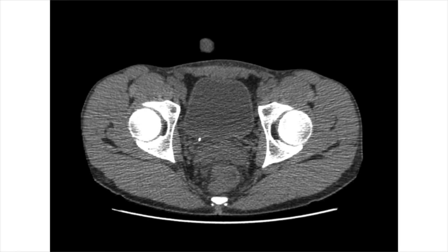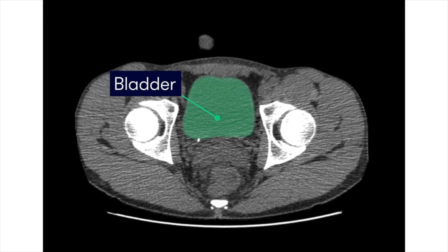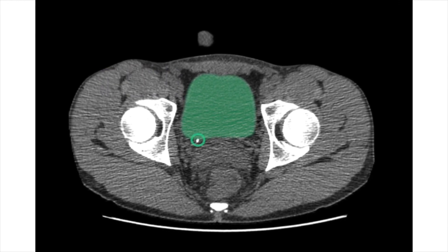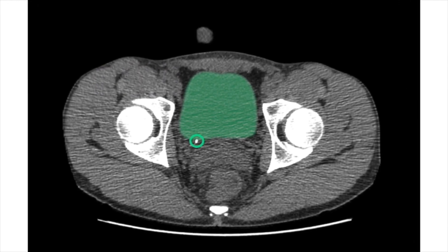Looking at this other CTKUB image, we can see the bladder sitting anteriorly, and posterior to this — positioned below it on the scan — we can see a urinary tract stone that's become lodged at the vesico-ureteric junction, or VUJ.